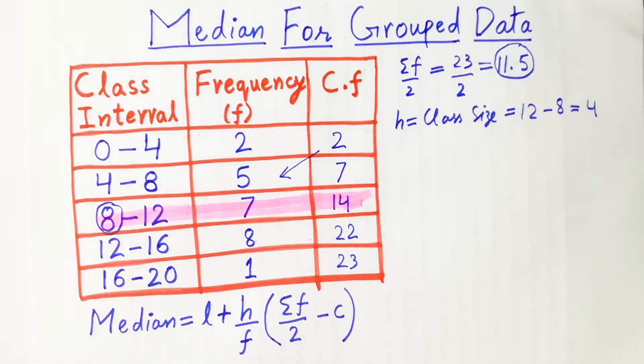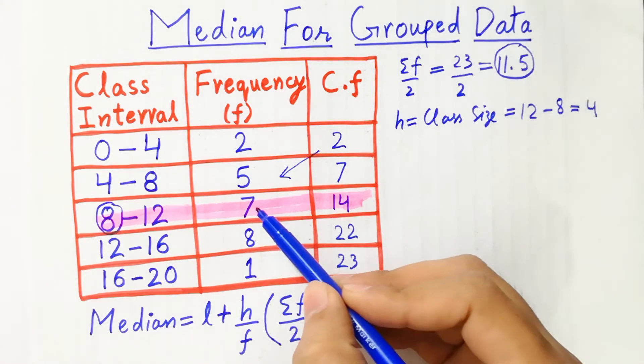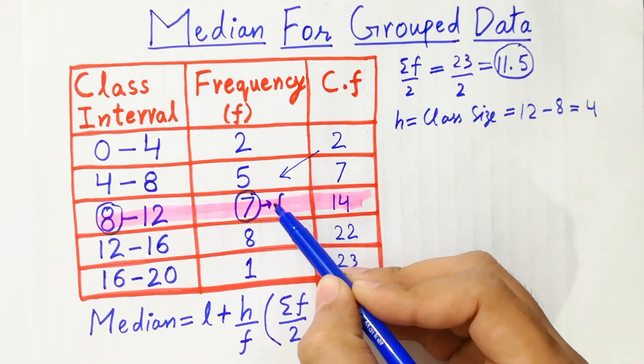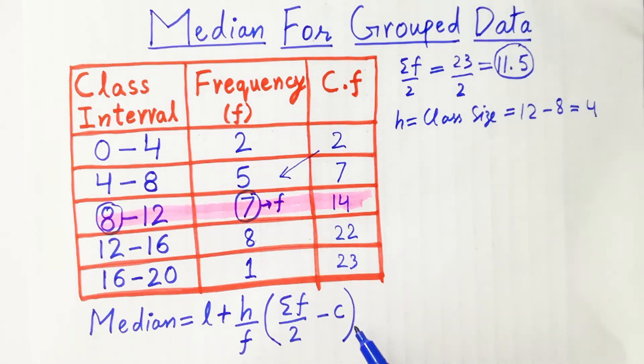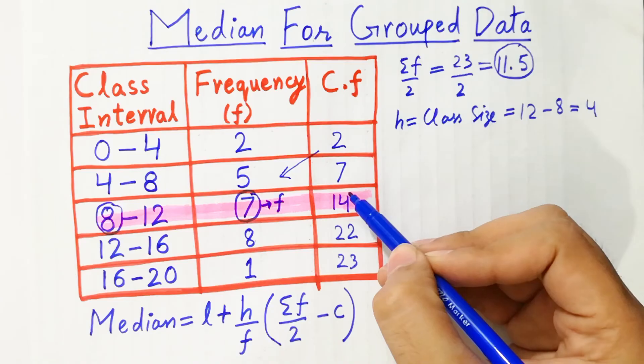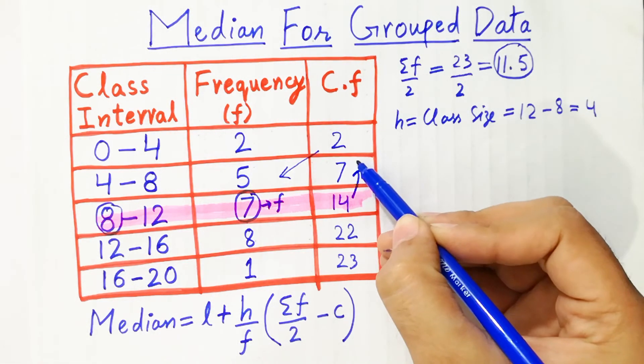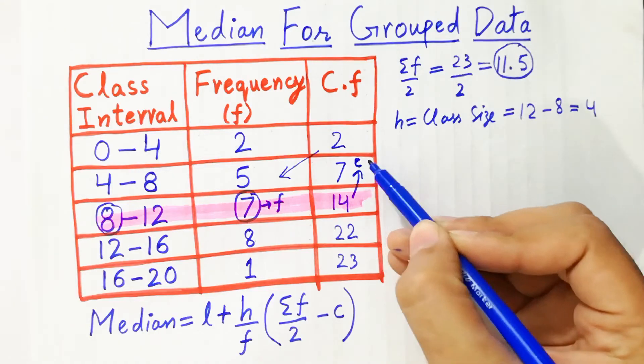And next, f is the frequency. So the selected group frequency is 7, so this value will be f. And next, c value is always the upper value here, this is the c value which is 7.